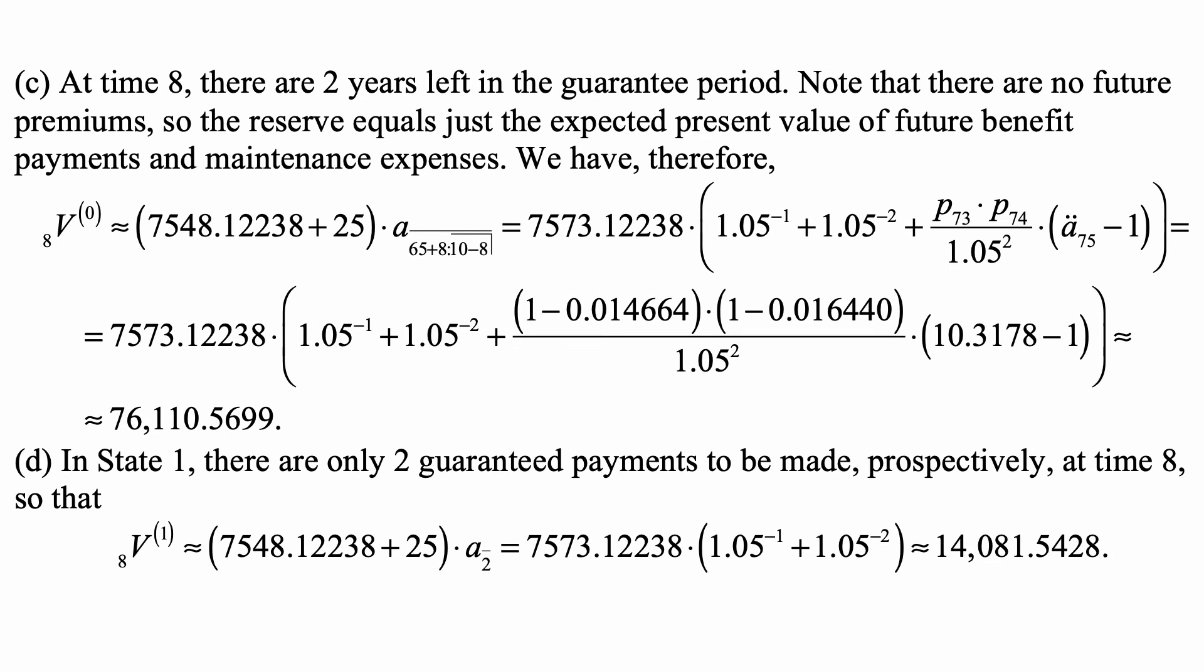And that is simply a two-year annuity certain plus deferred by two years annuity a75, which is a̅̈75 minus 1.